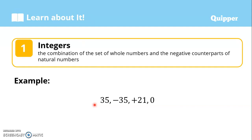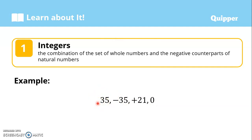Integers are the combination of the set of whole numbers and the negative counterparts of natural numbers. We have positive and negative numbers and zero. Examples of integers are 35, negative 35, positive 21, and zero. When a number has no sign, it is automatically considered as positive. So 35 is automatically considered positive.